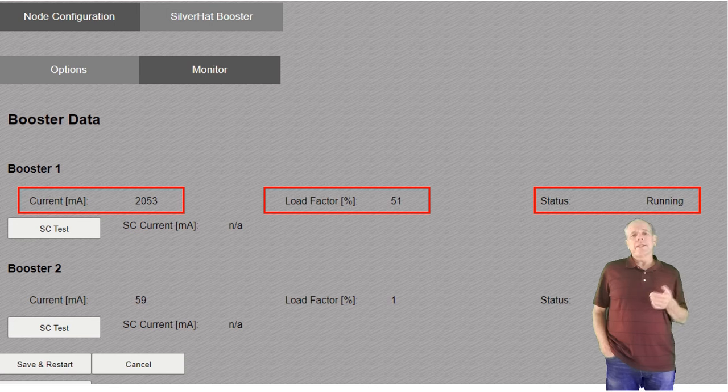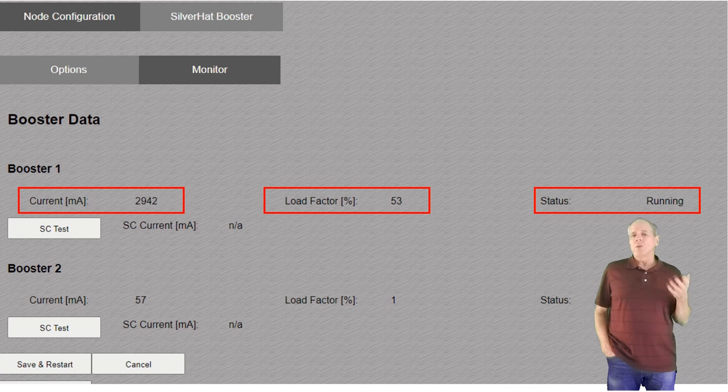Now I increase the current to 4A, which over time should bring the overload factor to 100%. And of course the load resistors are now heating up considerably.